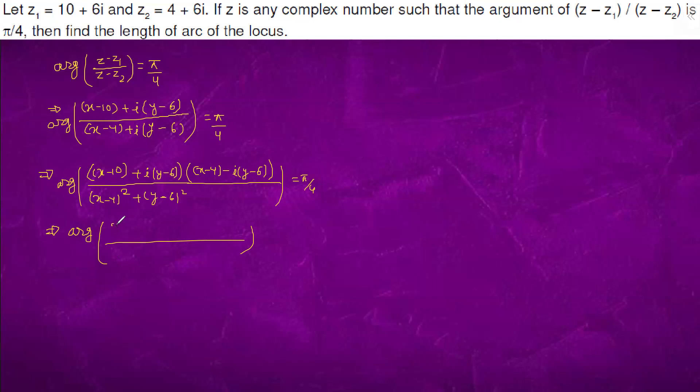We will get something like (x - 10)(x - 4) + (y - 6)² plus iota times (y - 6) times 6.